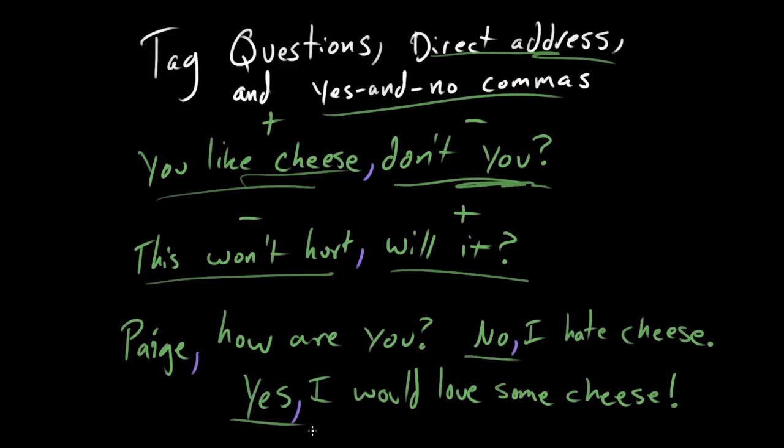But that's how it works. You would use, say yes or no and follow it with a comma. So this is just another example of how powerful commas are. You can use them in all these different separating abilities. So you can separate between the tag question, the positive assertion and the negative question, like, you like cheese, comma, don't you? Or this won't hurt, comma, will it?